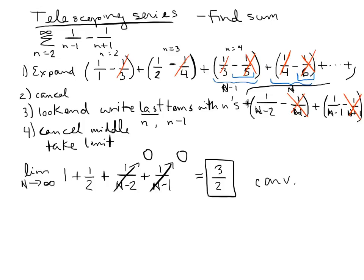So to summarize with telescoping series: expand it into a big expression, then cancel. After cancellations, look at what's left over and write an Nth term — or multiple terms with N's — depending on how many numerical terms were left over. Then shrink it back down, eliminate all the canceled terms including everything in the middle, and take a limit. Usually some terms go to zero and the series converges.